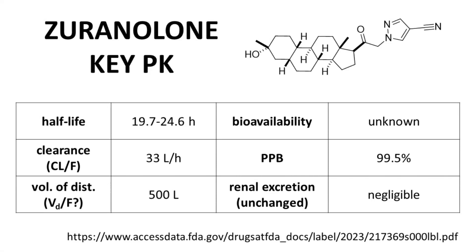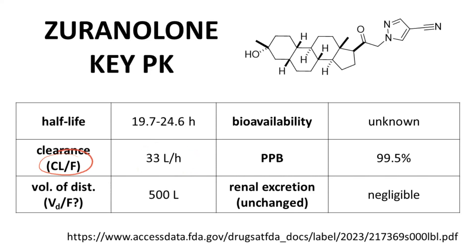Let's discuss the key pharmacokinetic parameters for xeranilone. The compound has a long half-life of about 24 hours. The clearance is 33 liters per hour; note that this is formally clearance over bioavailability (CL/F). Bioavailability is unknown — this just means that the drug has not been studied by IV administration in humans. The goal of the program was to develop an oral drug and the clinical trials have all involved oral administration. Without human IV dose comparisons, you cannot calculate oral bioavailability, so the math yields CL over F, and the prescribing information explicitly reports CL over F.